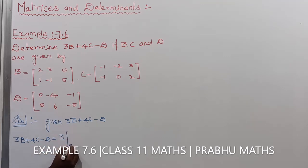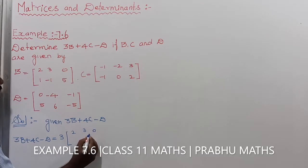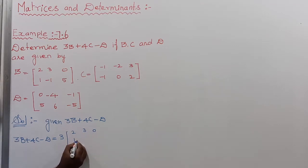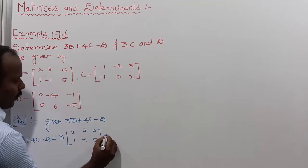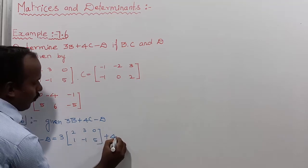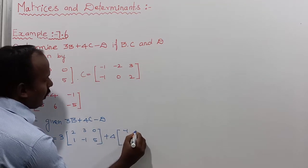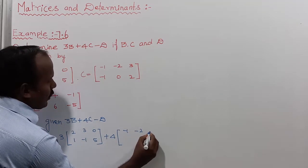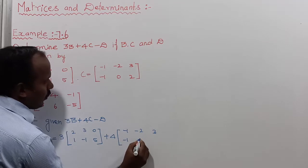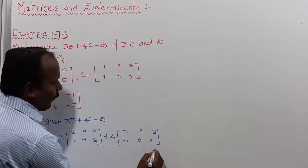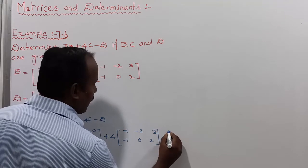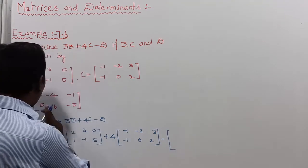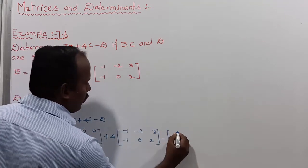That is equal to 3 times of B matrix: 2, 3, 0, 1, minus 1, 5. Next, 4 times C matrix: 1, minus 1, minus 2, 3, minus 1, 0, 2. Next, minus D, where D is equal to 0.